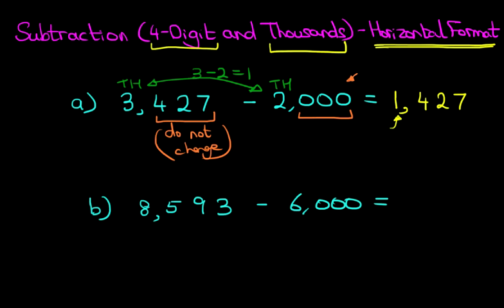Look at the number 6000. There are three zeros. Therefore, the three digits over here, 593, do not change.